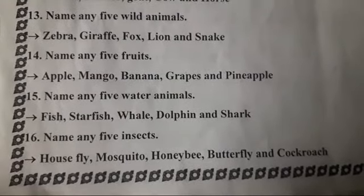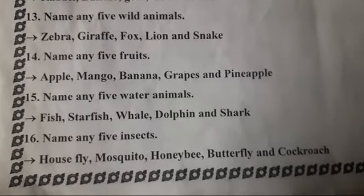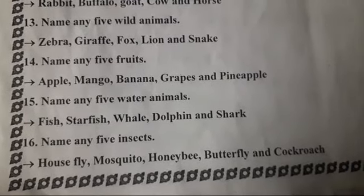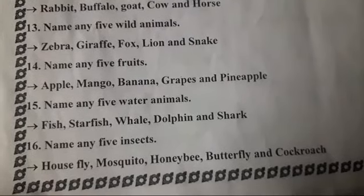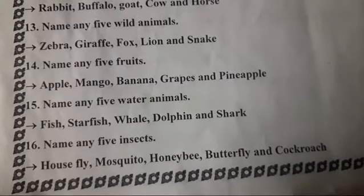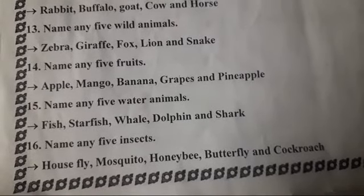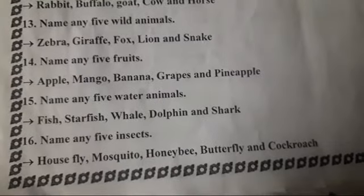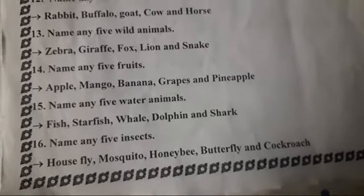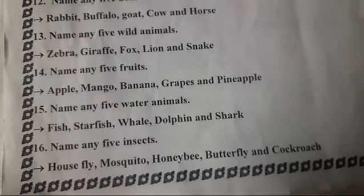Name any five water animals. Water animal yani children jo paani mein rehte hain, woh animal ko kya bolte hain? Water animals. Jaise ki fish, starfish, whale, dolphin, shark — woh sab kahan rehte hain? Paani mein rehte hain, isliye unhe kya kehte hain? Water animals.